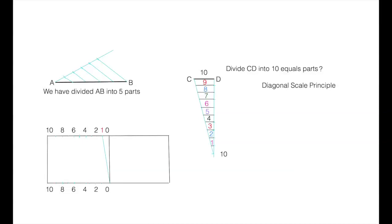Now we divide this vertical line into 10 equal parts. Like this 1, then same way 2, 3, 4, 5, 6, 7, 8, 9, 10.